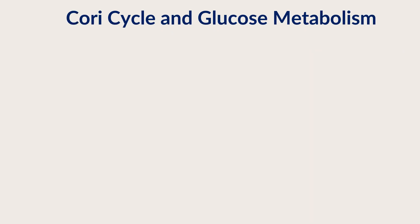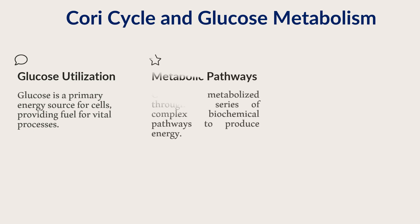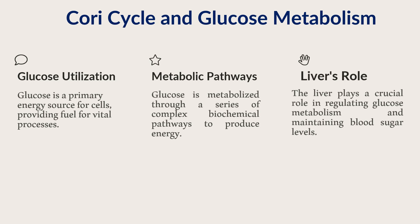Looking at the Cori cycle and glucose metabolism: glucose is the primary source of energy in our body. Glucose metabolism refers to the process of breaking down glucose for energy production. In the context of the Cori cycle, glucose metabolism involves the utilization of glucose by muscles and its subsequent conversion to lactic acid, which is then transported to the liver for further processing. Glycolysis is the main metabolic pathway involved, and the liver's role is to take up lactic acid and convert it back to glucose.